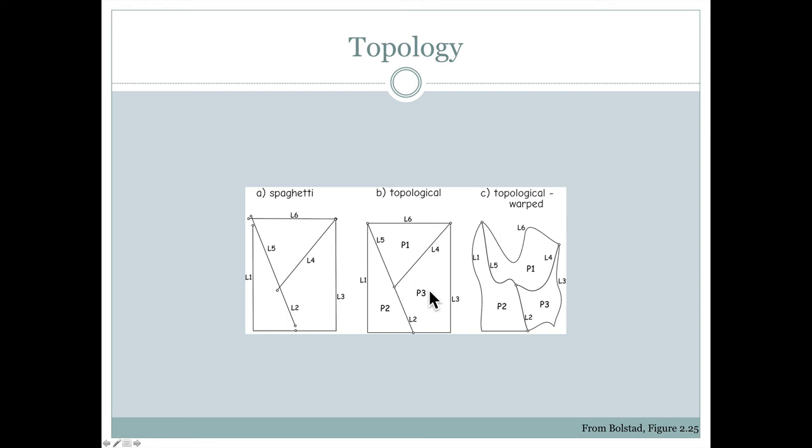And another good thing about topology is you can warp things in all sorts of different ways. You can apply operations like map projections or another thing called rubber sheeting, where we're basically trying to adjust our spatial coordinates. And all of those will preserve the same polygons as long as we build something with topology.